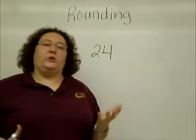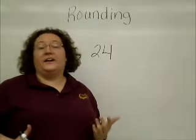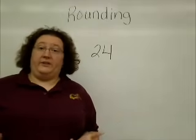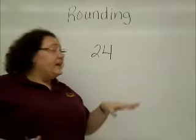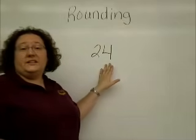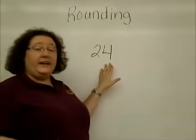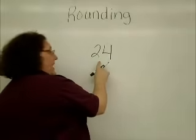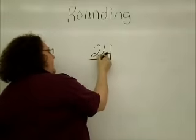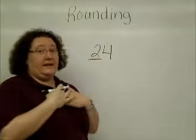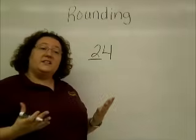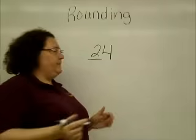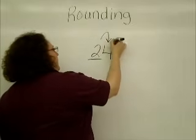Starting with the first line of the poem, it tells us to find our number — that's just the place we're rounding to. We're going to round to the nearest ten. If I count my places: ones, tens — the two here is my number. The next line tells me to go right next door, so I go to my neighbor, which is the four.